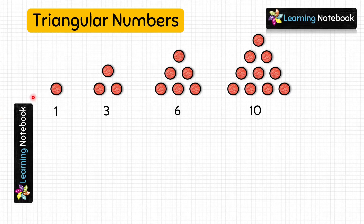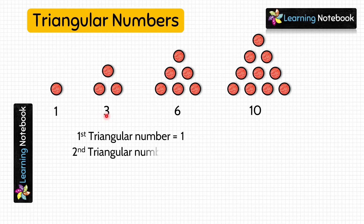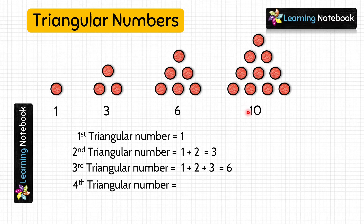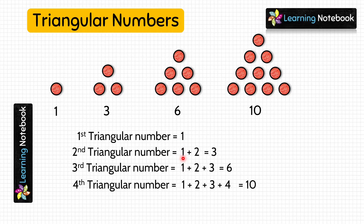Let's understand more about triangular numbers. The first triangular number is 1. The second triangular number is 3, which can be written as 1 bindi plus 2 bindis. The third triangular number is 6, which can be written as 1 bindi plus 2 bindis plus 3 bindis. We observe that the second triangular number is the sum of the first 2 numbers, the third is the sum of the first 3 numbers, and the fourth is the sum of the first 4 numbers.